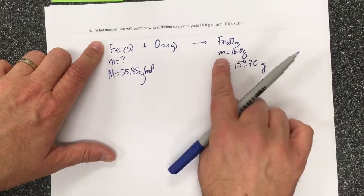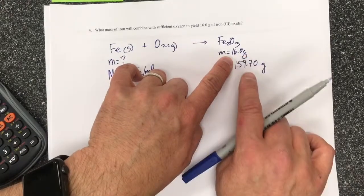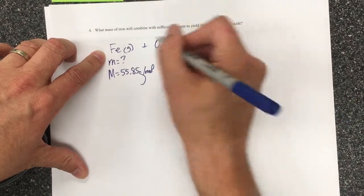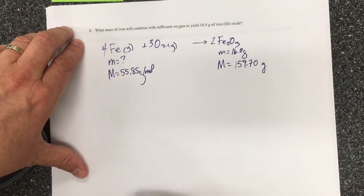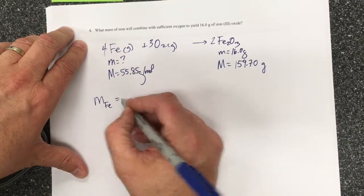So iron 3 oxide is this formula. I've organized that I know 16 grams of that and this is its molar mass. Now this is an unbalanced reaction, so I'll put a 2 here and a 3 here to balance my oxygen, then I get 4 irons. So ultimately what they want me to find is the mass of iron.